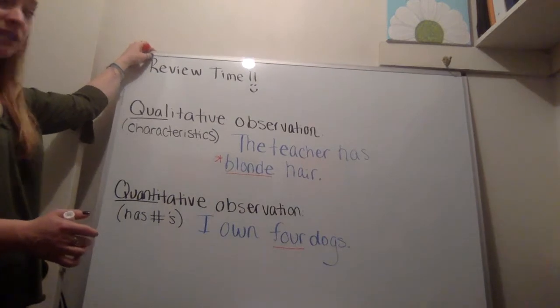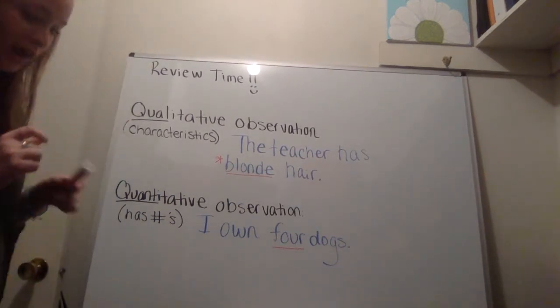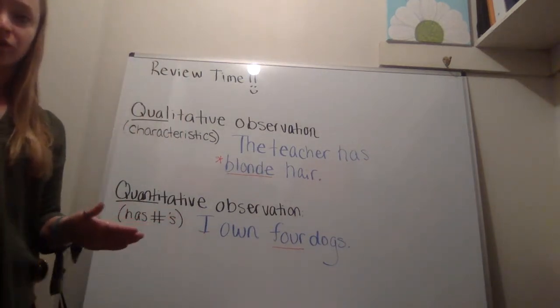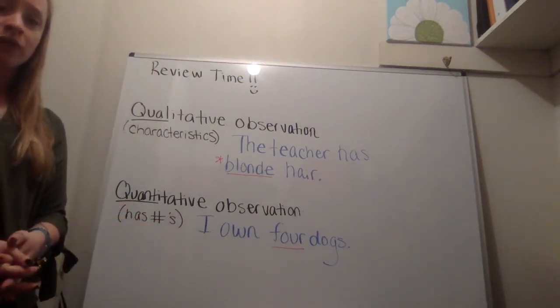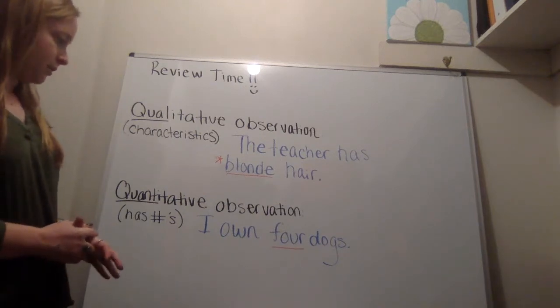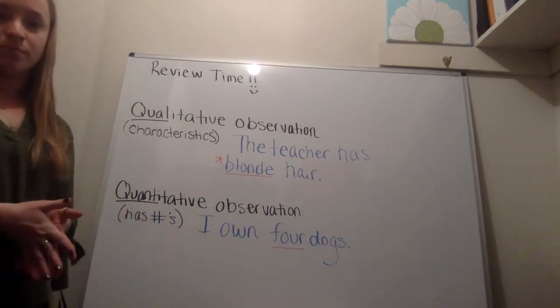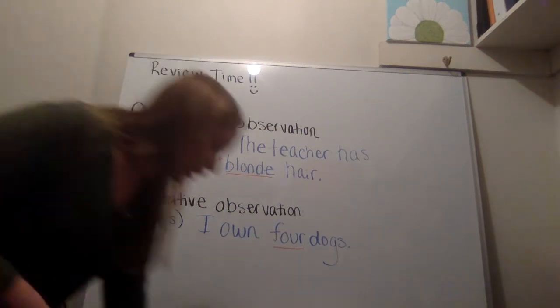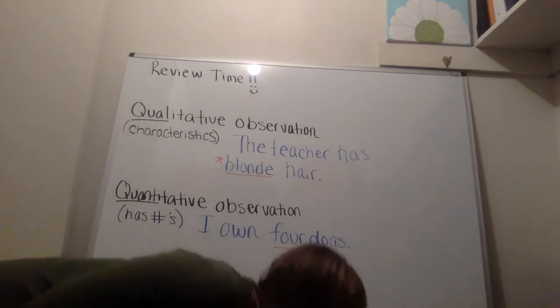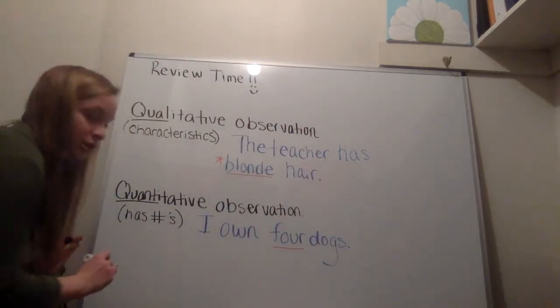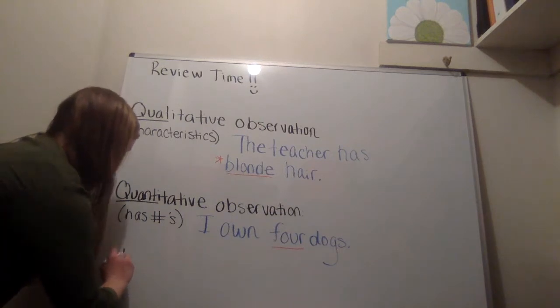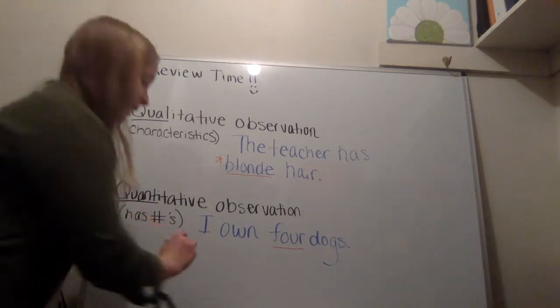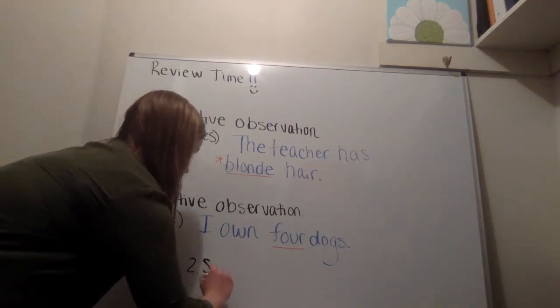Now, a couple of things that I didn't write on the whiteboard yet that I kind of want to talk about are how we can tell whether or not something is an observation at all. So you can't say there's something that you can't see. You have to make that observation. And how we make those observations are with our five senses. So if you cannot hear it. So I'm going to write down the five senses. If you can't hear it.